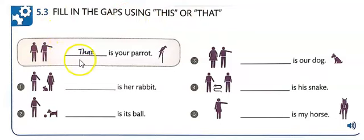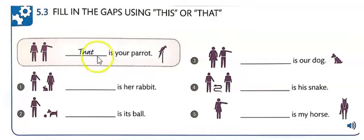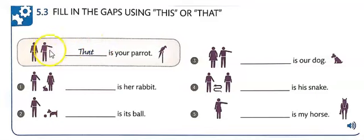For example, 'That is your parrot.' Why did we use 'that'? Because the parrot is farther away from this person.